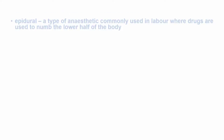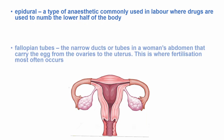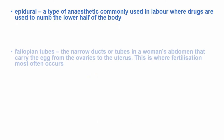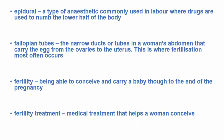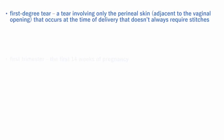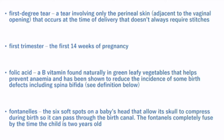Epidural is a type of anesthetic drug commonly used in labor to numb the lower half of the body. Fallopian tubes are narrow ducts in the woman's abdomen that carry the egg from the ovaries to the uterus; this is where fertilization most often occurs. Fertility is being able to conceive and carry a baby to the end of pregnancy; fertility treatment is a medical treatment that helps a woman conceive. First degree tear is a tear involving only the perineal skin adjacent to the vaginal opening that occurs at the time of delivery and does not always require stitches. First trimester is the first 14 weeks of pregnancy. Folic acid is a vitamin B found naturally in green leafy vegetables that helps prevent anemia and reduce the incidence of some birth defects, including spina bifida.